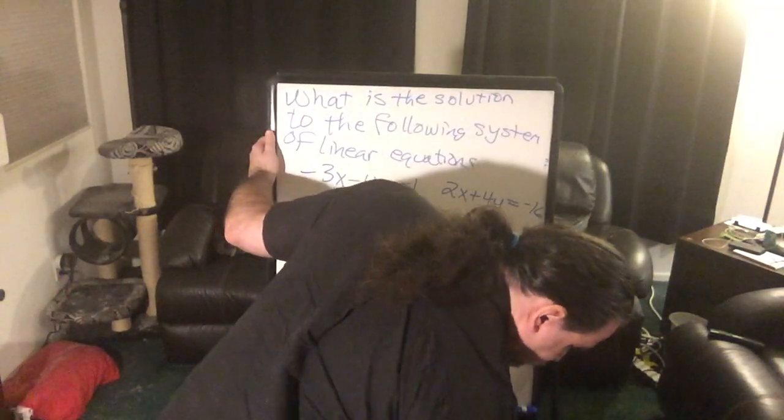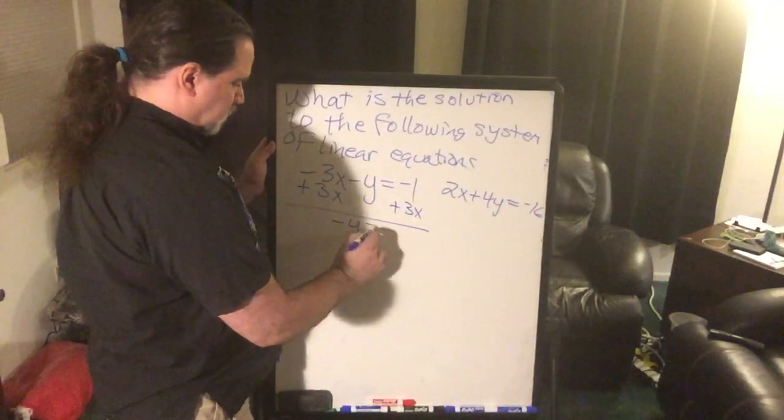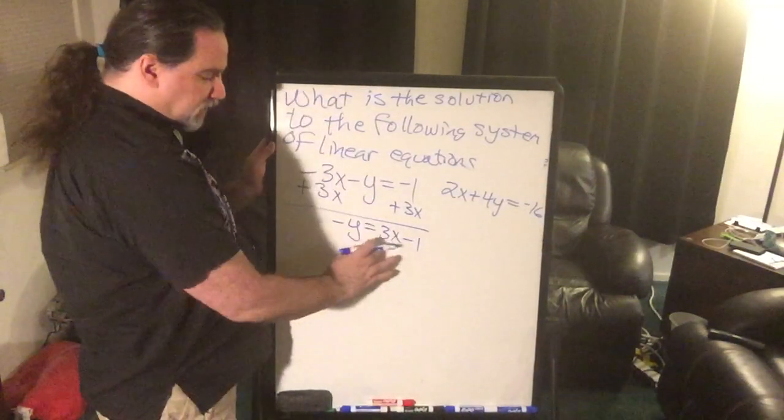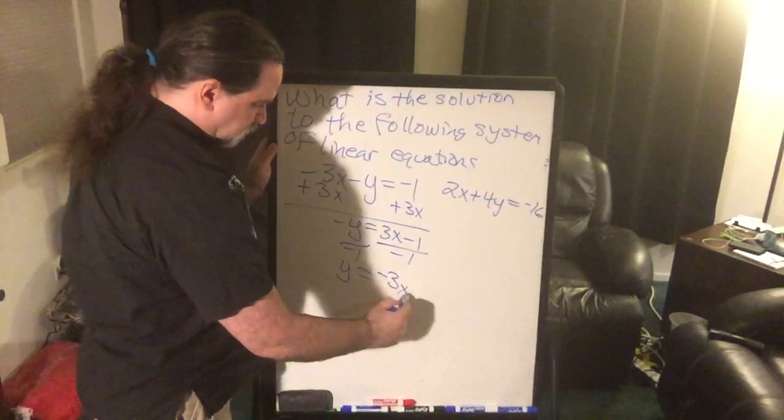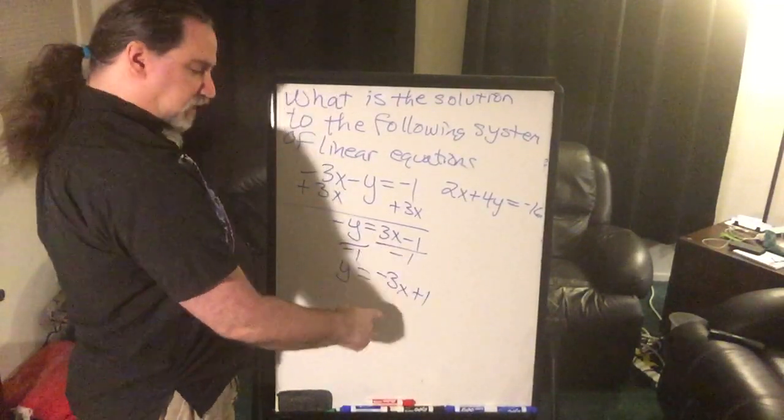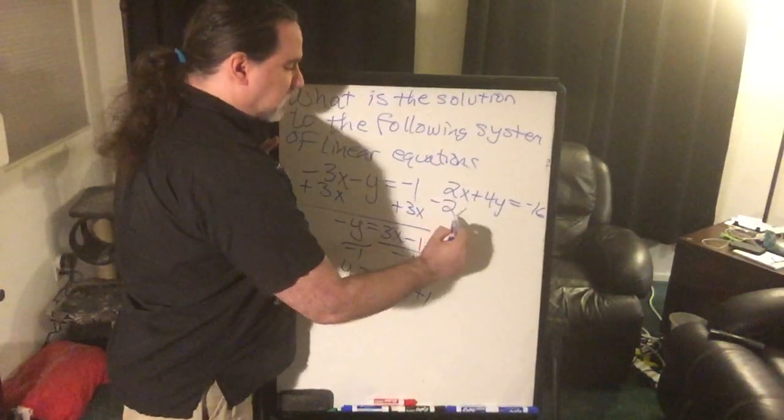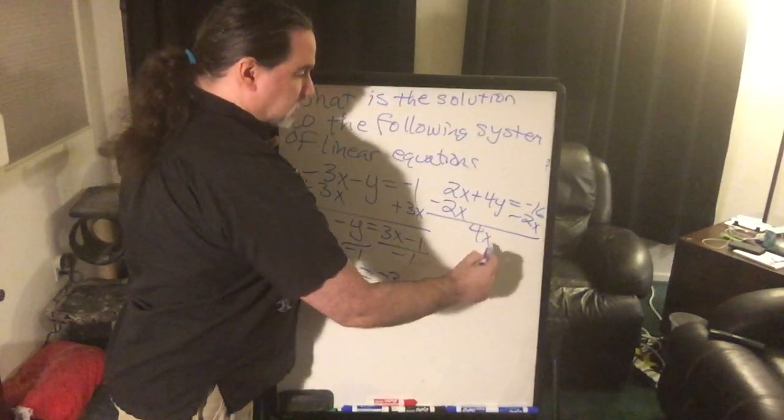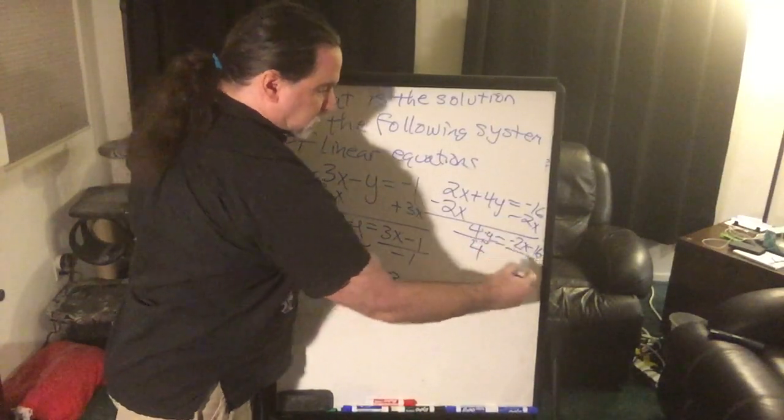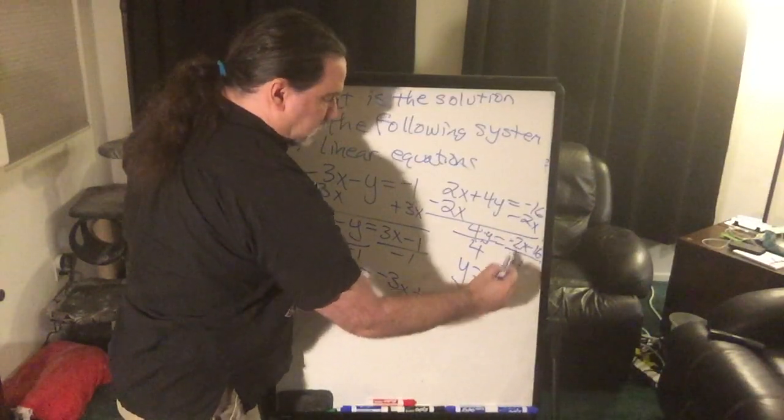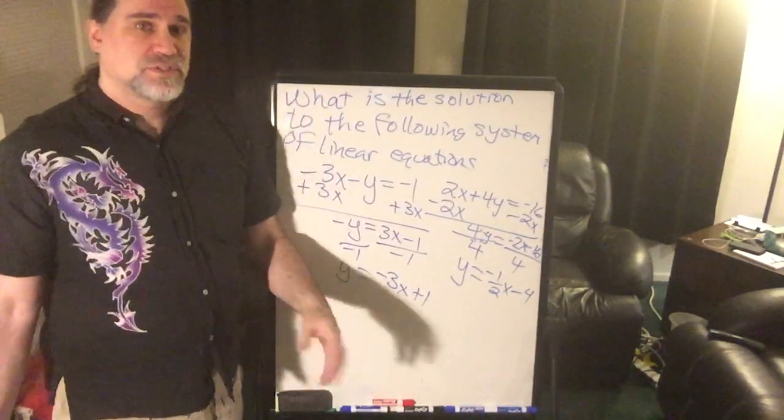I'm going to add the 3x to both sides. I want to get it into that mx plus b format, except that the y should be a 1y, not a negative 1y. So, positive 3 divided by negative 1 is negative 3. Negative 1 divided by negative 1 is positive 1. So, now I have it in slope-intercept form, y equals negative 3x plus 1, ready to graph. But before I do that, let me get the other one converted as well. I'm going to subtract 2x from both sides and divide everything by 4. I get y equals 2 divided by 4 is a half, negative. Negative 16 divided by positive 4 is a negative 4. And now I have two equations in slope-intercept form, ready to graph.